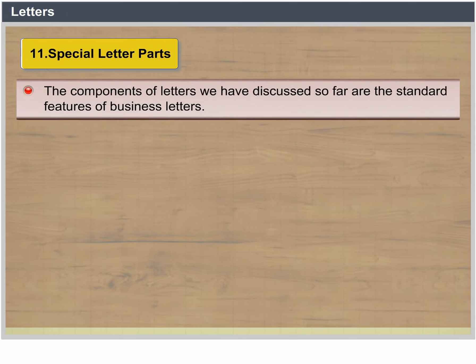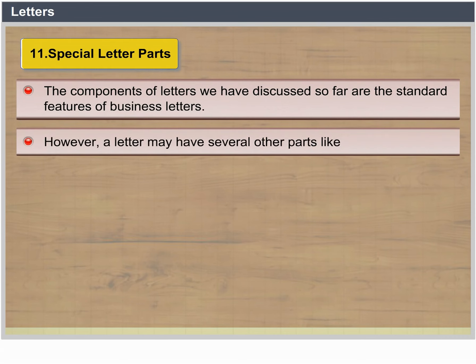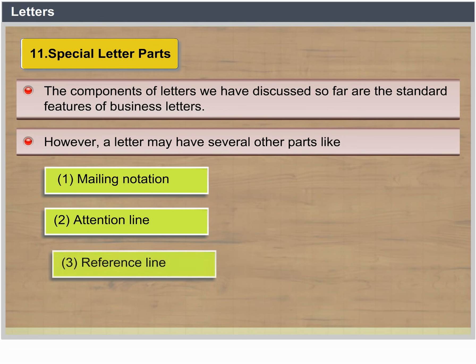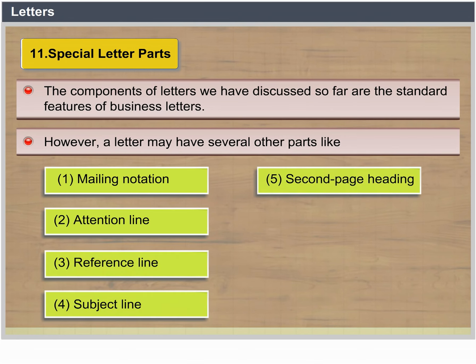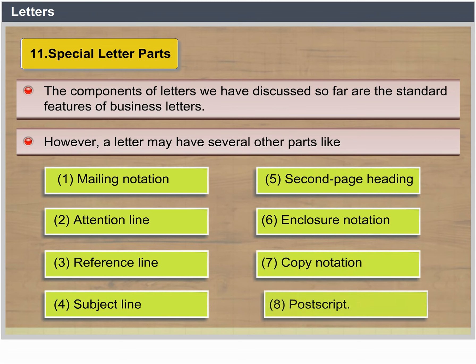Special Letter Parts. The components discussed so far are the standard features of business letters. However, a letter may have several other parts like: 1. Mailing Notation, 2. Attention Line, 3. Reference Line, 4. Subject Line, 5. Second Page Heading, 6. Enclosure Notation, 7. Copy Notation, and 8. Post Script.